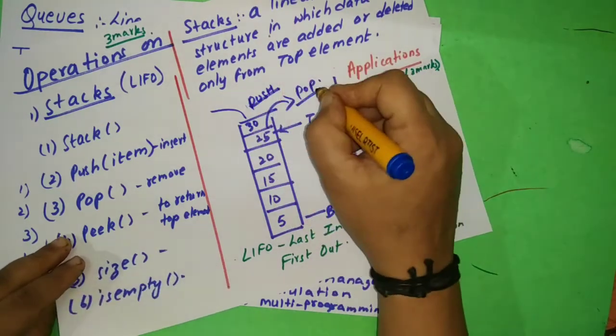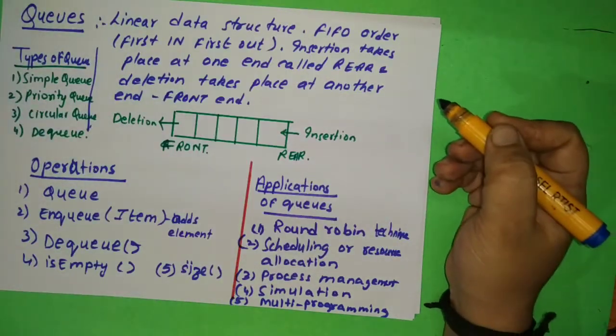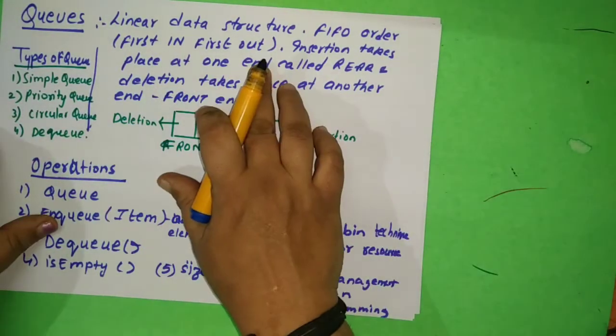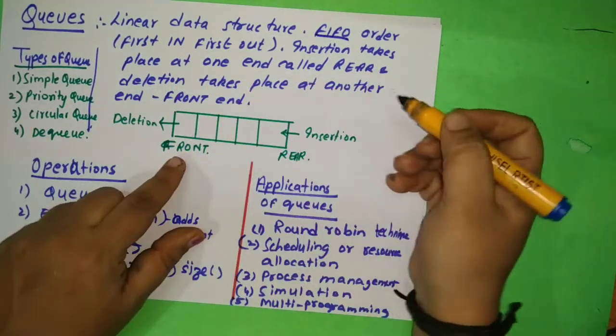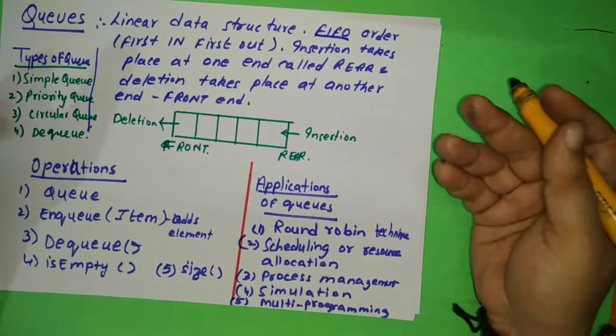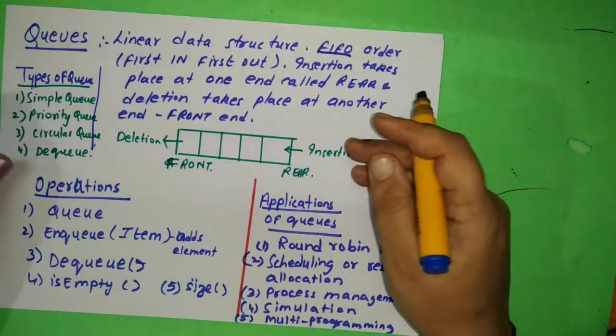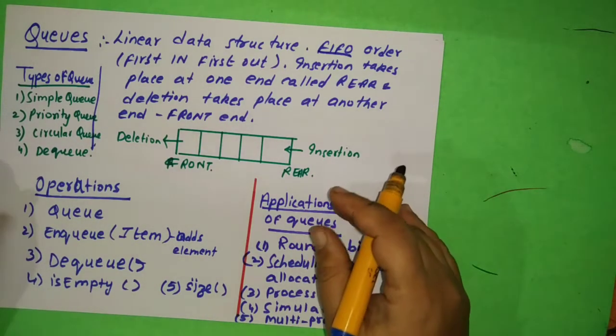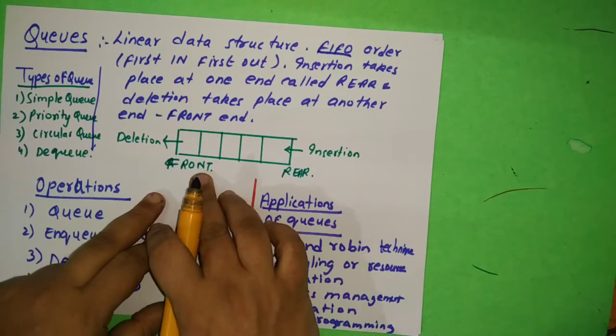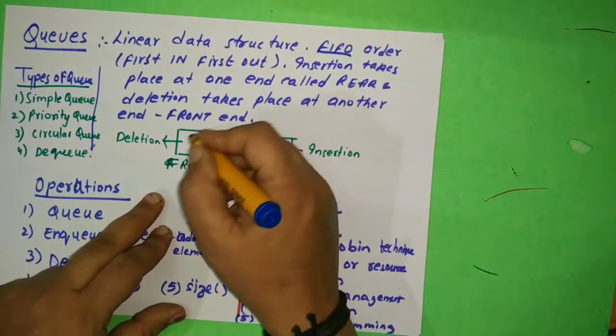So this is push, this is pop. Now we are looking at queue. Queue is first in first out, that is FIFO order. So insertion takes place at one end called the rear. You can imagine the movie queue - when you go to buy tickets and all, we are joining the queue in the last. We cannot go in the front and push the person and say that I'm coming now. No, we can't do that. So deletion happens in the front - after taking the ticket they move out.